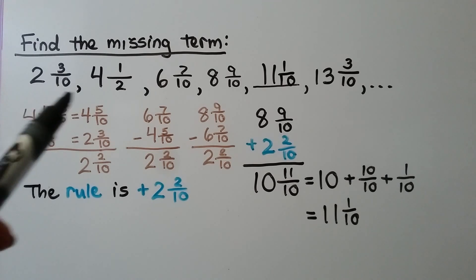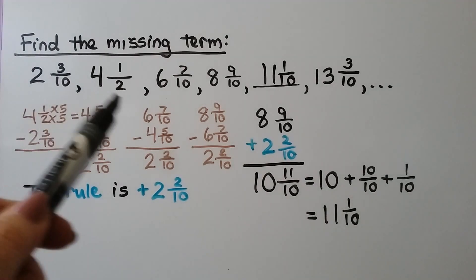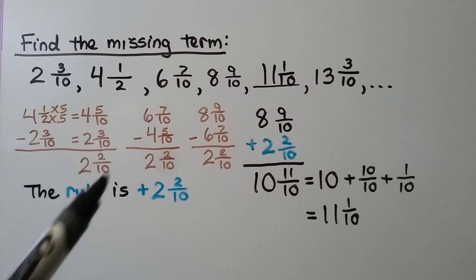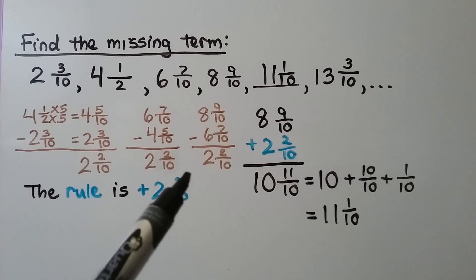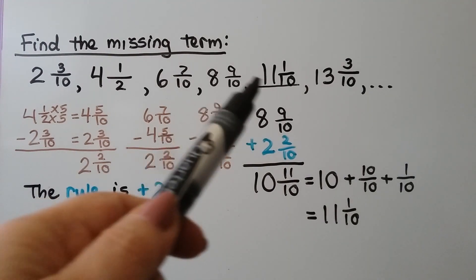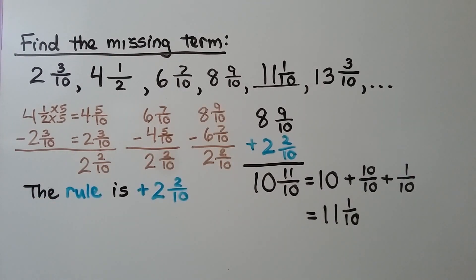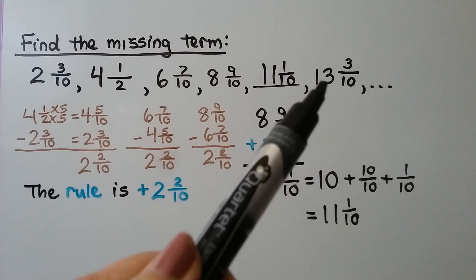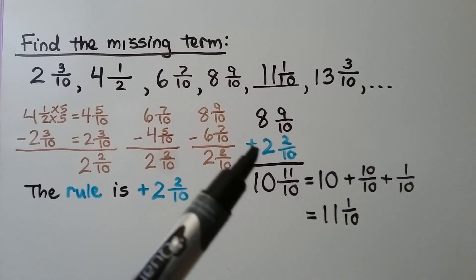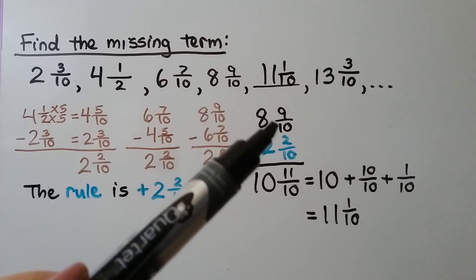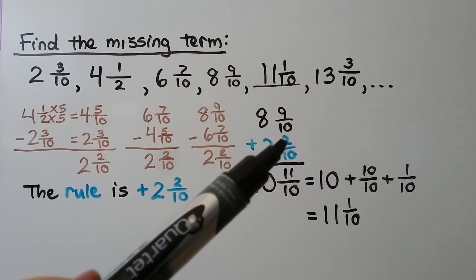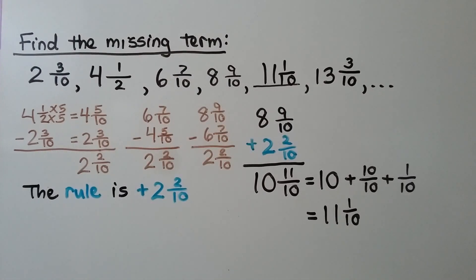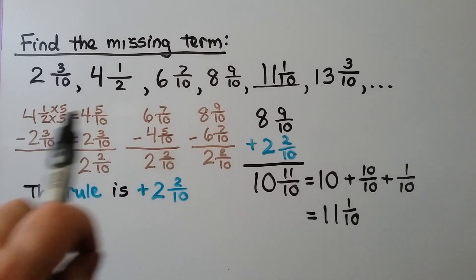We used subtraction between the terms to find the common difference, then added it to the known term to find the missing term. We can check: eleven and one tenth plus two and two tenths — one plus two is three tenths, and eleven plus two is thirteen — equals thirteen and three tenths. Yes, it works for the whole sequence.